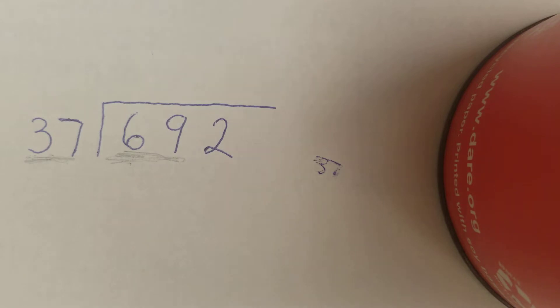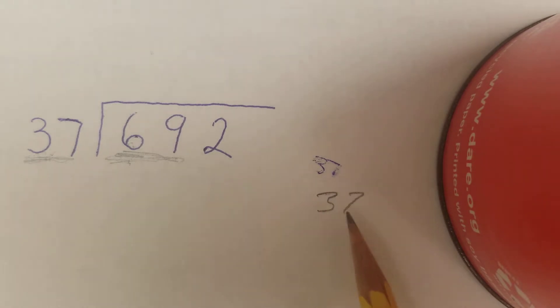There's not a real rhyme or reason how to do this. Some of you with better number sense might have your own strategies. I usually look at this first digit, the 3, and ask myself, how many times will it go into 6? I can skip count by 3s to 6 twice, so I'll take 37 times 2. 7 times 2 is 14, carry my 1. 2 times 3 is 6 plus 1 is 7, so 2 times is 74.